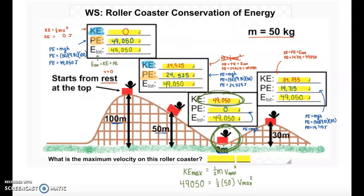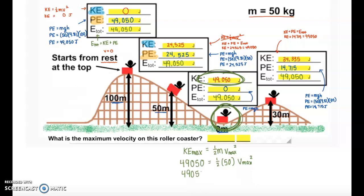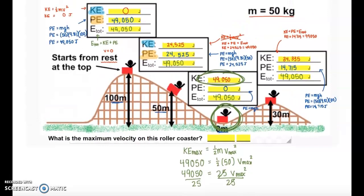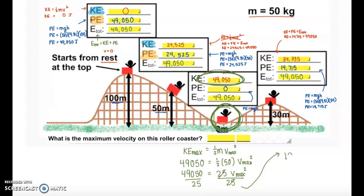I'll simplify. One-half of 50 is 25. I'll divide both sides by 25. Plugging that into my calculator, I get 1,962 is equal to my velocity max squared. Square-rooting both sides to undo that squared, I get a maximum velocity of 44.3 meters per second.